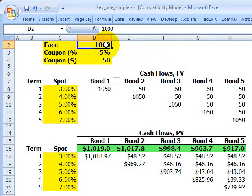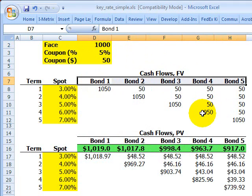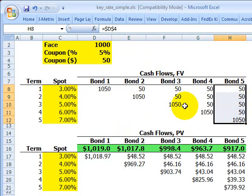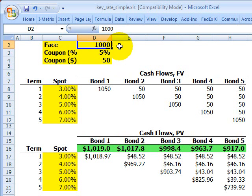As usual I need some assumptions. I'm going to look at a portfolio of five bonds. The only difference will be their term to maturity. Bond five will be a five-year bond, bond one is a one-year bond. All of the bonds have a face value of a thousand, paying an annual coupon of five percent. I'm going to keep it simple with an annual coupon as opposed to the semi-annual coupon that I usually show. And that means a fifty dollar coupon every year.